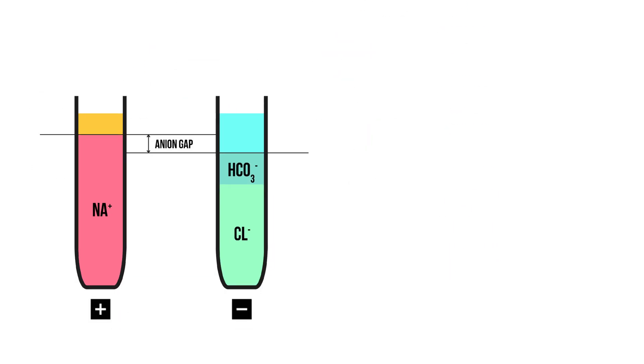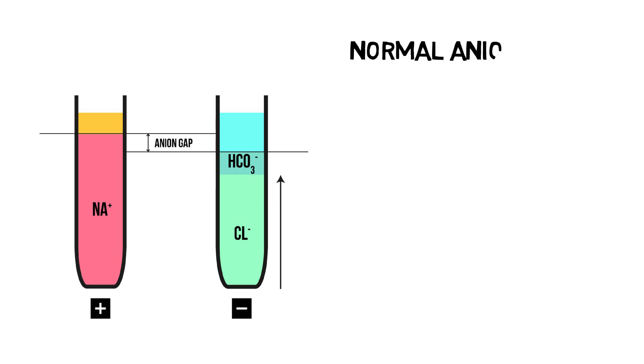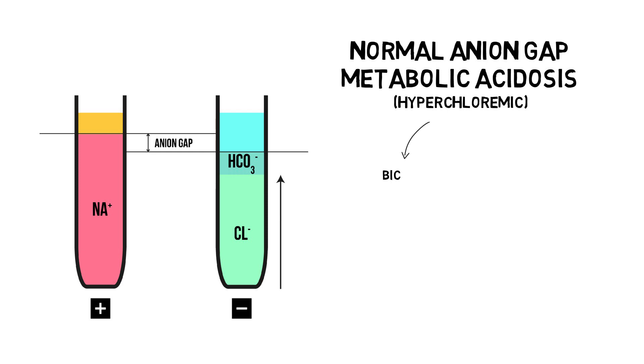Let's focus on the first one, an increase in chloride. What happens to the anion gap if we have a decrease in bicarbonate, with a corresponding increase in chloride? Well, nothing! The anion gap stays the same. This is called a normal anion gap metabolic acidosis, sometimes referred to as a hyperchloremic metabolic acidosis for obvious reasons. If the primary problem for your metabolic acidosis is loss of bicarbonate, your body will compensate by increasing chloride levels to maintain electrochemical neutrality.